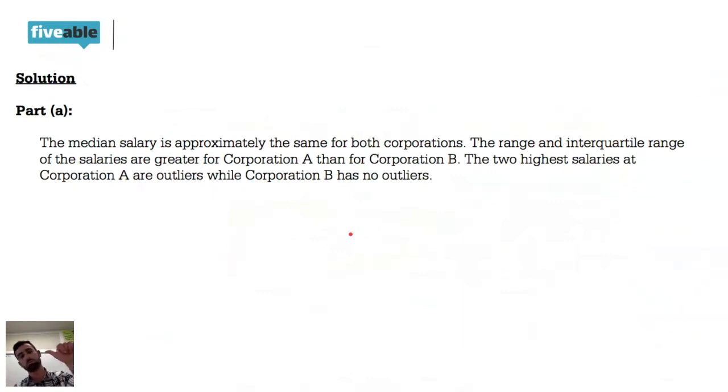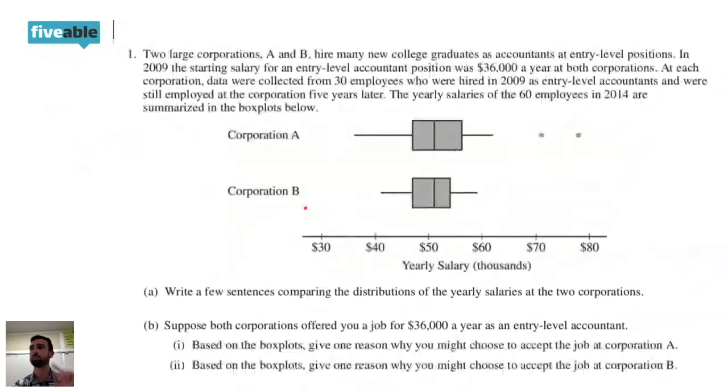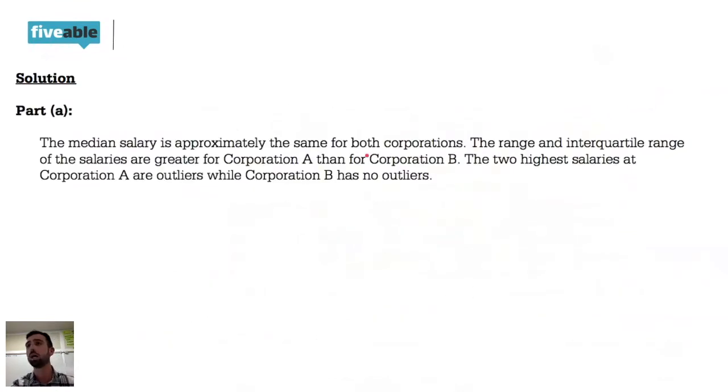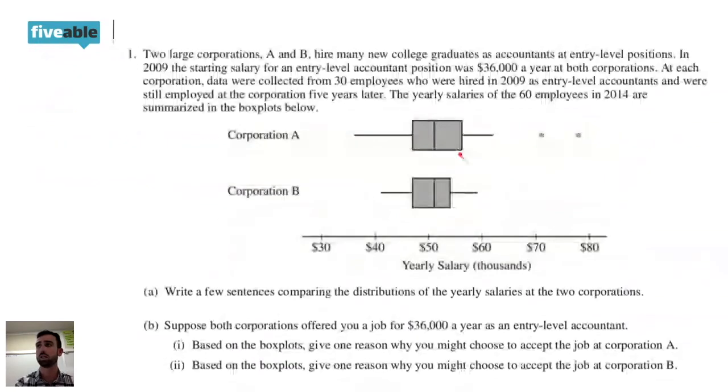We talked about center, we talked about unusual, now we got to talk about shape. We see Corporation B is roughly symmetrical, not perfectly symmetrical but roughly symmetrical, and Corporation A is probably roughly symmetrical as well. Let's take a look at what they say. Oh, they don't have shape - that's probably a typo on their part. Gotta talk about shape.